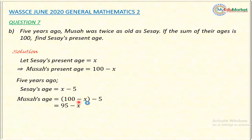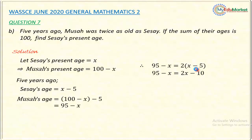Now I'll formulate the equation. Five years back, Musa was twice as old as Cissi, so: 95 minus X equals 2 times (X minus 5). Expanding the bracket: 2 times X is 2X, and 2 times minus 5 is minus 10. Collecting like terms: 2X moves to the left-hand side and 95 moves to the right. This gives minus X minus 2X, which is minus 3X, and on the right: minus 10 minus 95.